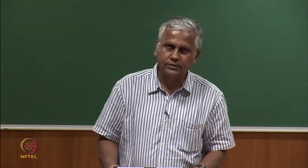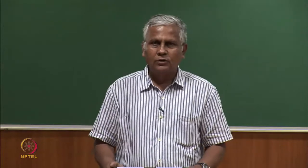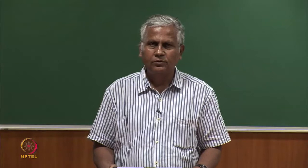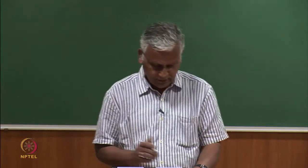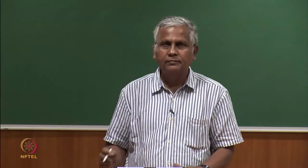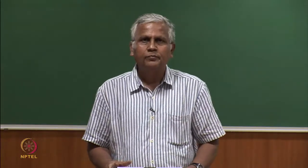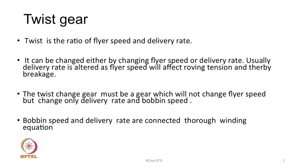Today we are going to discuss how to select various change gears for changing various parameters of the machine, especially process parameters. The first thing is the twist gear. Twist is an important parameter for roving and we need to change twist from time to time depending upon the count of roving we want to produce or the fiber type — in terms of their length or fineness — we need to change the twist.